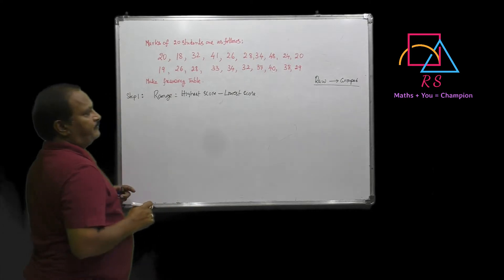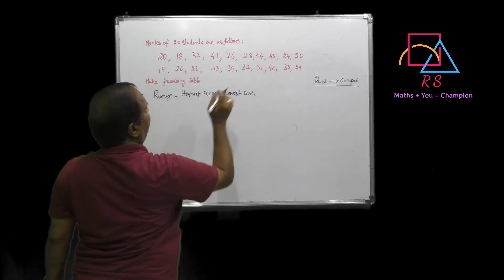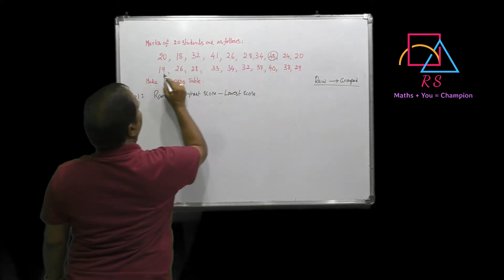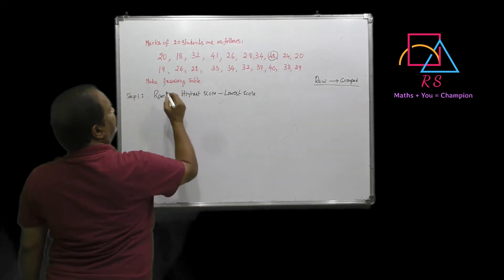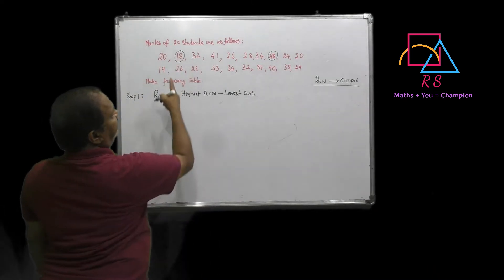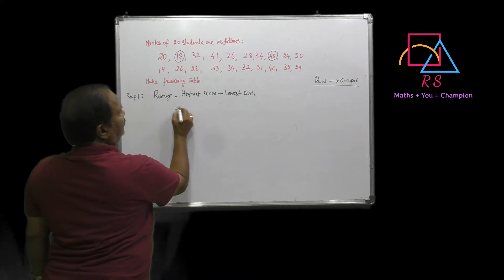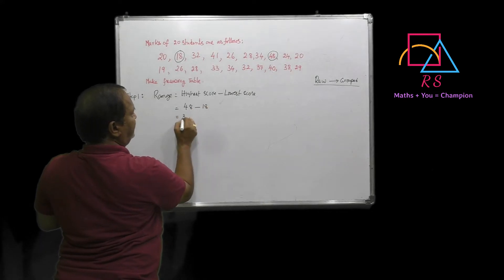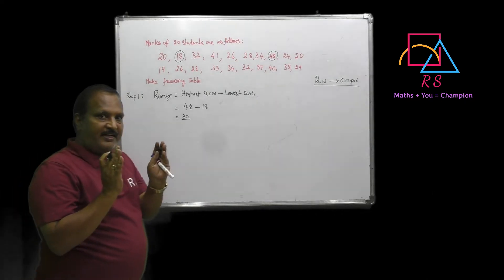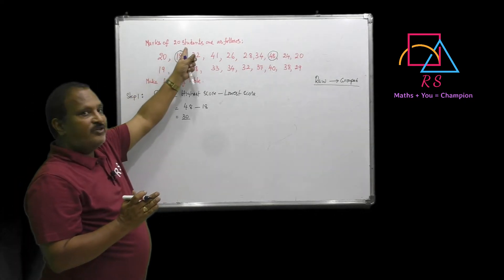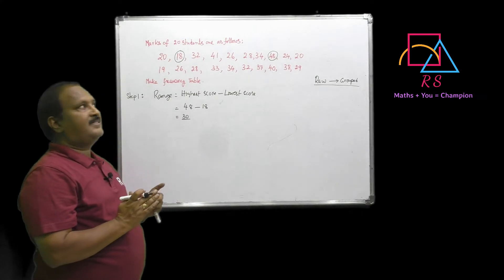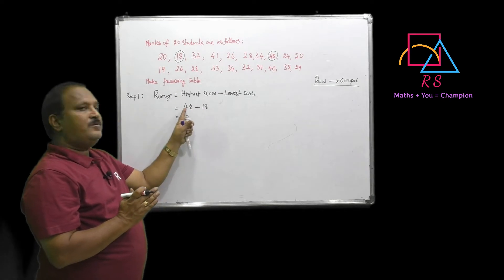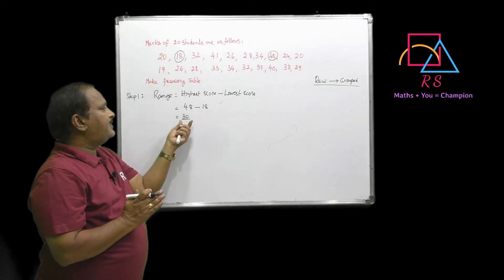So identify from the data: the highest score is 48 and the lowest is 18, which gives 48 minus 18 equal to 30. So with a range of 30 marks, all 20 students got marks between 18 and 48 — the range of the marks is 30.